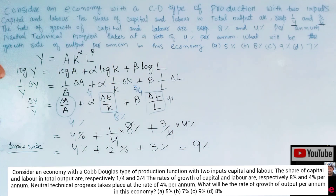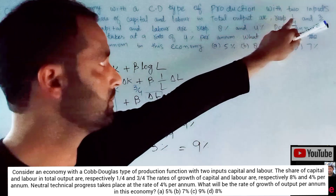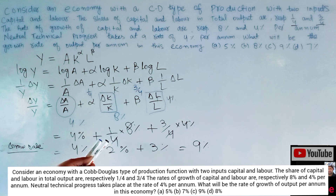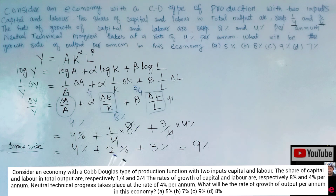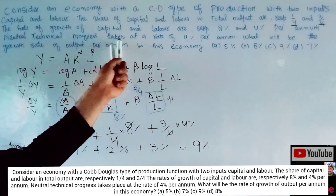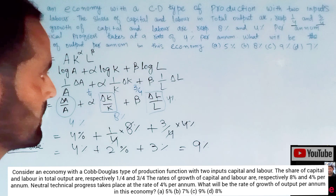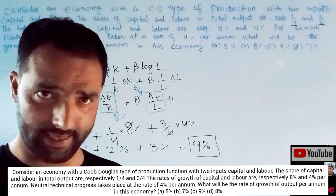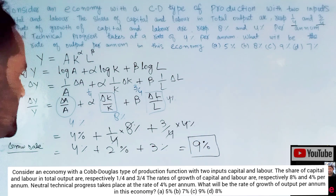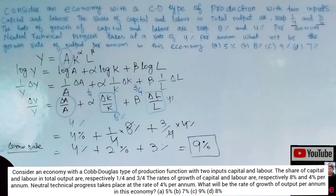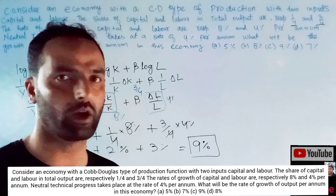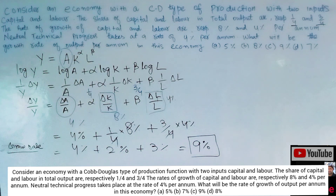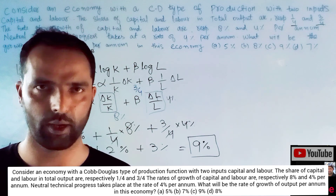I hope I made the calculation right. The growth rate in this economy comes out to be 9%. This 4% component, what we call A, is the total factor productivity — it explains that portion of growth which is not explained by capital and labor, and we also call it the Solow residual. I hope I made myself clear in this video. Thank you.